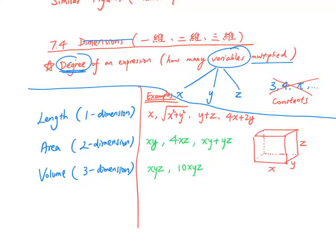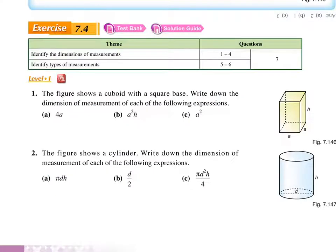So for this part, your only thing to do is to identify which degree an expression is, and then what is the dimension of that, and then you have to understand these three words: length, area, volume, and that's all. So I used some examples from exercise 7.4 to recap about this concept again.